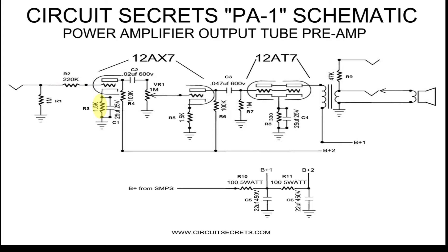R3 is the cathode resistor. This resistor separates the cathode from ground and allows the cathode to develop a slightly positive charge in relation to the ground. In the old days, a voltage was supplied directly to the cathode with a separate power supply.